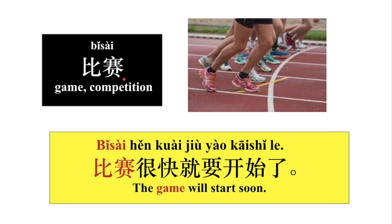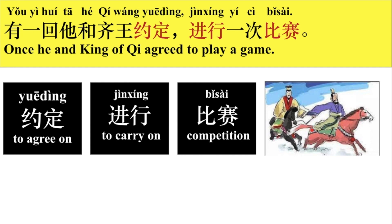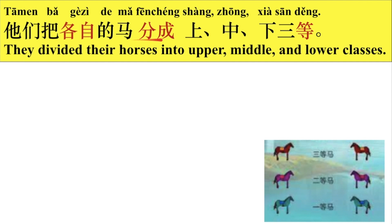好，那我们来看一下比赛。比赛很快就要开始了。那他们这个比赛就是比赛赛马。好，那有一回，他和齐王约定，进行一次比赛。他们把各自的马分成上、中、下三等。